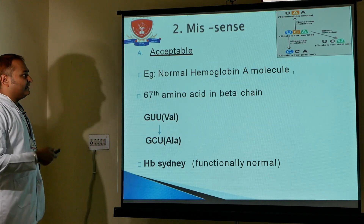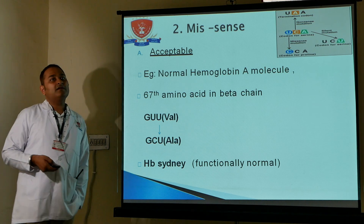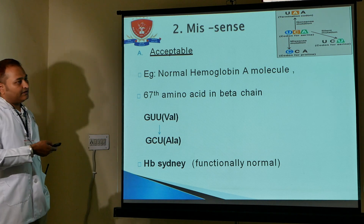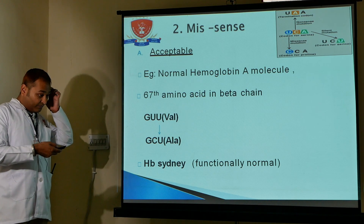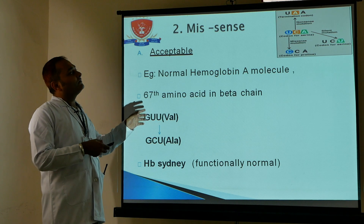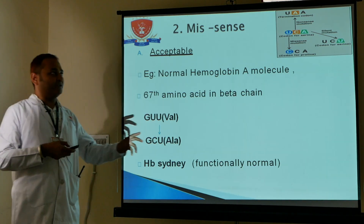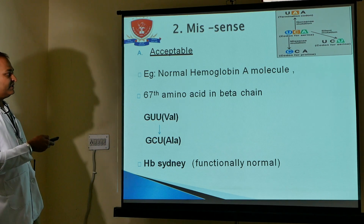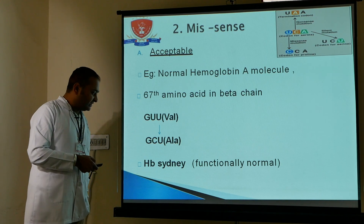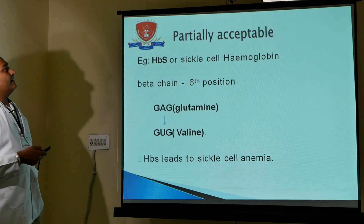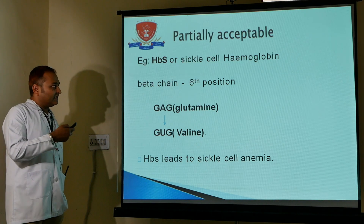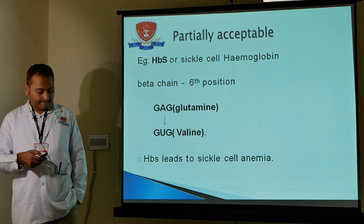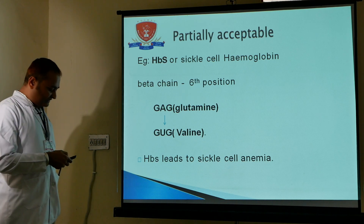Acceptable mutations: due to degeneracy and ambiguity, some amino acids are coded by different codons, so the change may have no effect. Normal hemoglobin has 64 amino acids in the beta chain. Hemoglobin Sydney is partially acceptable — similar to sickle cell anemia — where sickle cell hemoglobin is partially acceptable and leads to sickle cell anemia.